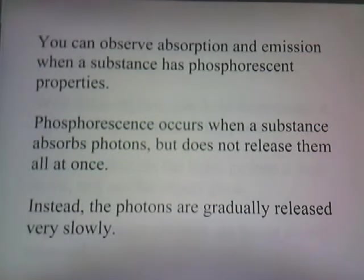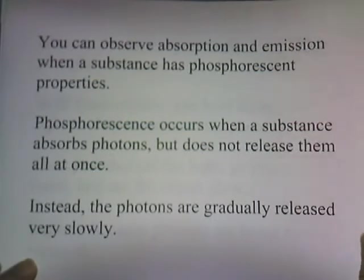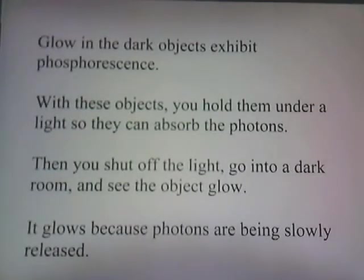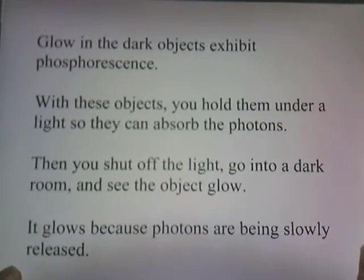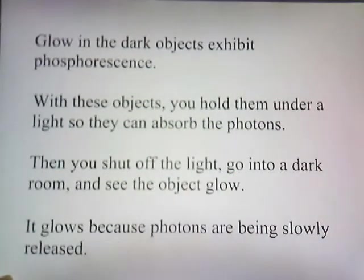You can observe absorption and emission spectrums when a substance has phosphorescent properties. Phosphorescence occurs when a substance absorbs photons but doesn't release them all at once — instead, the photons are gradually released very slowly. Glow-in-the-dark objects exhibit phosphorescence. With these objects, you hold them under a light so they can absorb photons, then shut off the light and go into a dark room and you can see the objects glow. They glow because the photons are being released slowly. I have a glow-in-the-dark object sitting under a lamp absorbing photons right now.